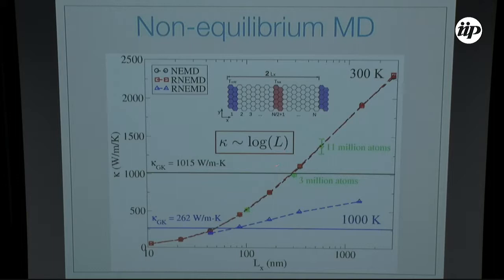We also did it at higher temperature and got similar behavior — this is for 1,000 Kelvin. What we conclude is that the thermal conductivity goes with the log of the system size. We were very happy with this because that's what you'd expect for a 2D system — thermal conductivity in a 2D system should diverge with the log of the system size. But graphene is not really 2D, since the atoms can also move out of plane.